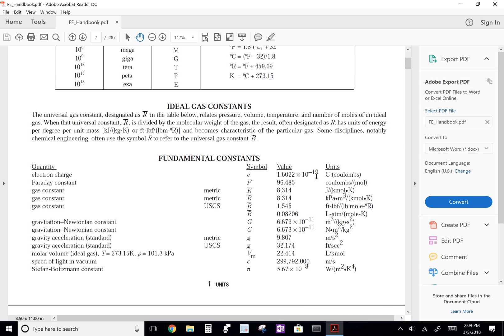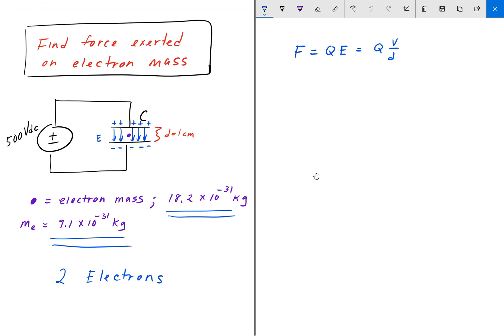That is the electron charge for one electron. We have two electrons, so we're going to multiply that number by two. So we know that Q is equal to 2E.